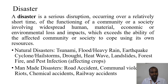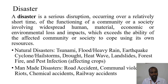Disasters are classified into two main types. The first is natural disaster and the second is man-made disaster. As humans, we are not able to control natural disasters because they occur naturally. For example, the tsunami we faced, in which we lost a lot of lives. Similarly, we face floods due to heavy rain, earthquakes, cyclones, droughts, heat waves, landslides, and forest fires. These are natural disasters, which we will discuss in detail in the next slides.